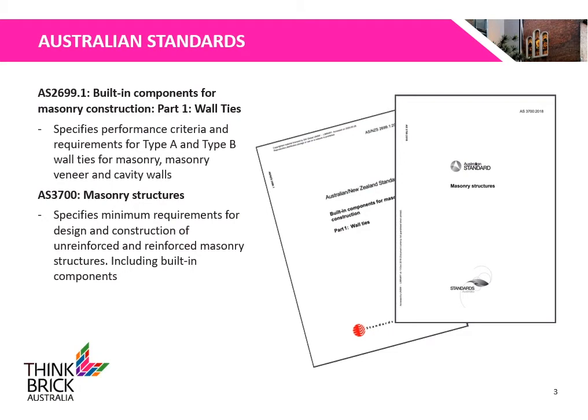AS2699.1 Built-in Components for Masonry Construction Part 1 specifies performance criteria and requirements for Type A and Type B wall ties for masonry, masonry veneer and cavity walls. AS3700 Masonry Structures specifies minimum requirements for the design and construction of unreinforced and reinforced masonry structures including built-in components.